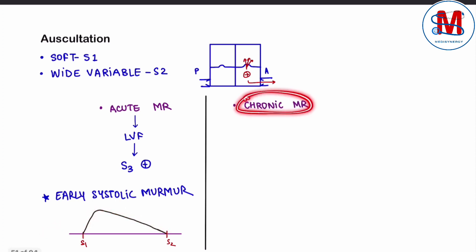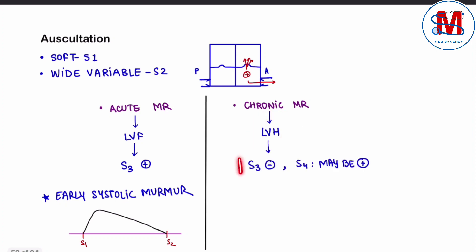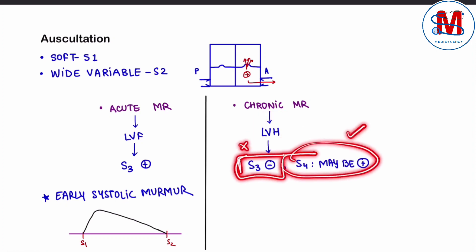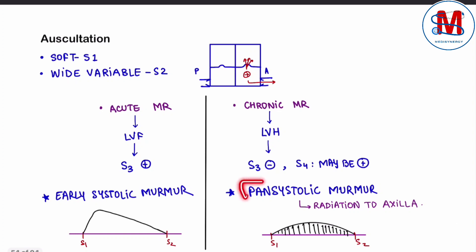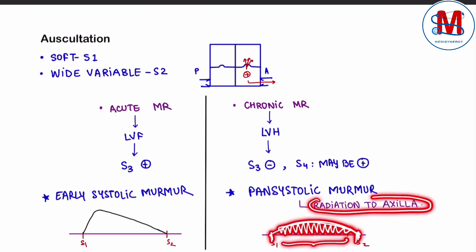Aur chronic MR mein, left ventricular hypertrophy hoti hai. Isi current se S3 present nahi hoga, but S4 present ho sakti hai. Usi mein pan-systolic murmur sunne ko milaiga — agar intensity ki baat ki jai, to S1 se lekar S2 tak, systolic phase mein uniform intensity dekhne ko milegi. Pan-systolic murmur with radiation to the axilla.